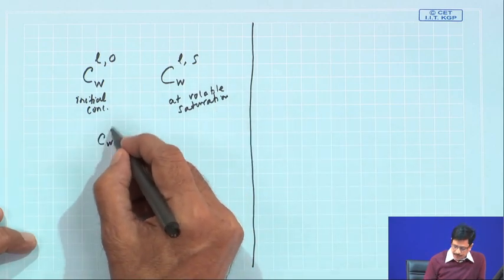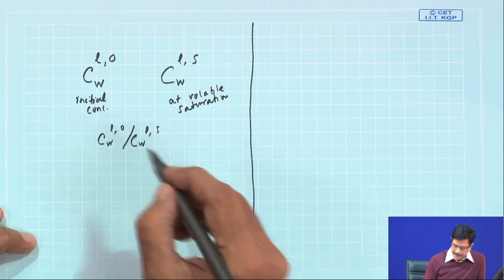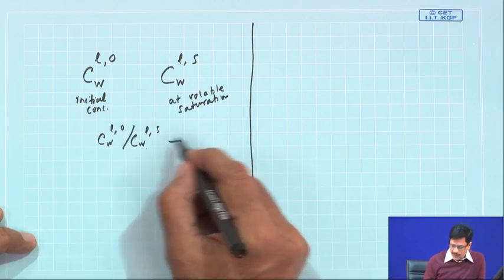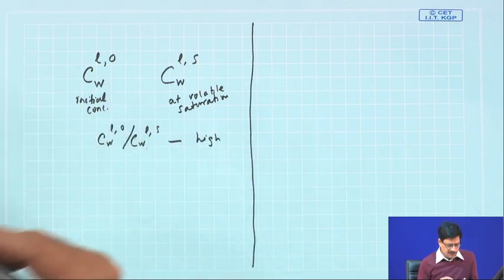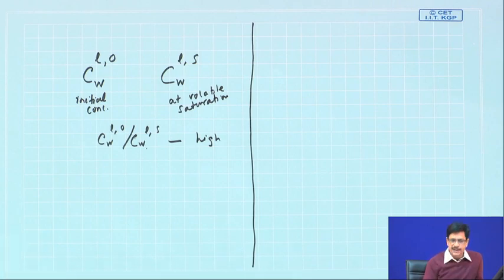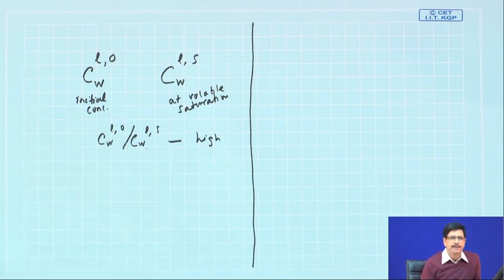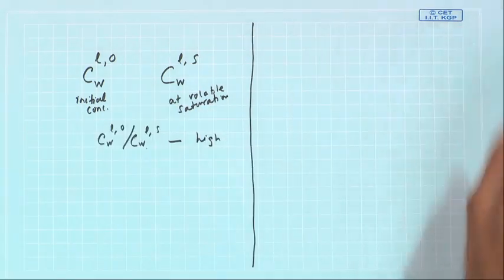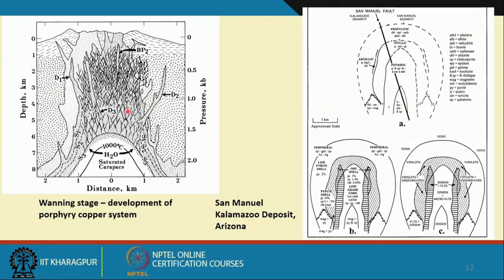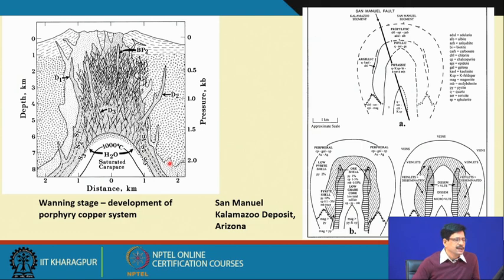The ratio CWL0/CWLS is generally high if the original water content is high and there has been significant crystallization of the melt before attaining water saturation. It is also sensitive to the depth at which the body is emplaced. In the context of porphyry copper deposits, they are generally emplaced at depths corresponding to pressures of about 500 bars to 2 kilobars — corresponding to approximately 2 to 7 kilometers below the earth's surface.